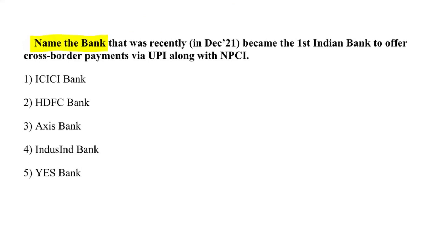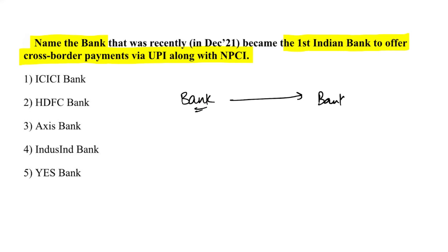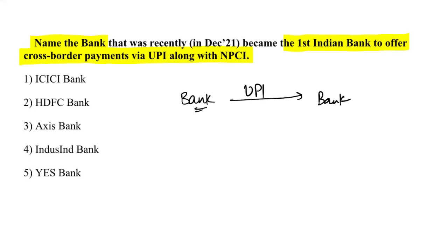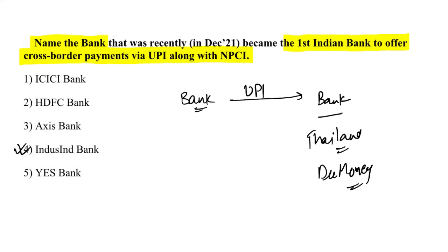IndusInd Bank became the first Indian bank to offer cross-border payment via UPI, in partnership with NPCI. Thailand's PromptPay will accept payments via UPI from Indian banks. IndusInd Bank's MD and CEO is Sumant Kathpalia, and its headquarters is in Mumbai, Maharashtra.